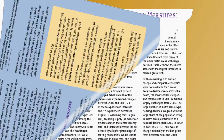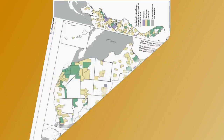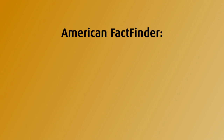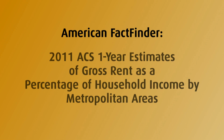Estimates similar to those included in the brief can be found using American FactFinder. This tutorial provides instructions on accessing gross rent — monthly rent plus the estimated cost of utilities — as a percentage of household income by metropolitan areas using American FactFinder, using the 2011 ACS one-year estimates.